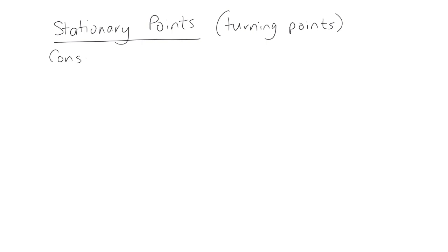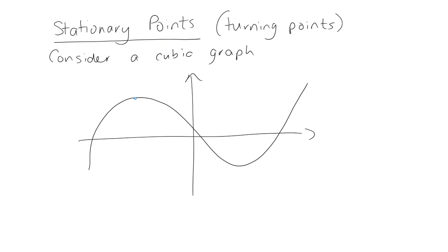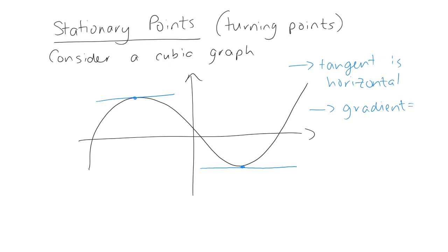If we consider a cubic graph, it has got a turning point here where the graph turns and goes in the other direction, and it's got a turning point down here. If we look at the tangents at those turning points, we can see that the tangent is horizontal, which means the gradient is zero. So for turning points, dy by dx equals zero. This is clearly a maximum turning point here and a minimum turning point down at the bottom.